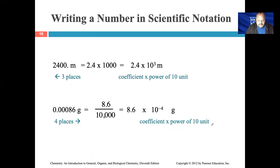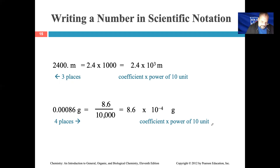One thing they do here is put in the decimal point. If you have a whole number with no decimal point given, in terms of scientific notation we put the decimal in. Then the question becomes: how many places do we have to move the decimal point to get that number into a coefficient between one and ten? If we have 2400 with the decimal point at the end and we move it three places to the left — one, two, three — that gives us a coefficient of 2.4.